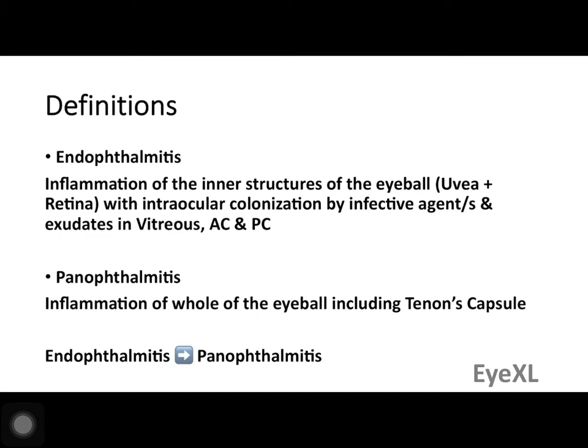Endophthalmitis is an inflammation of the inner structures of the eyeball — 'endo' meaning inside. Basically the uvea and retina are affected, with intraocular colonization by infective agents. It could be unimicrobial or polymicrobial infection; it is more commonly polymicrobial. Exudates are seen in the vitreous, anterior chamber, and posterior chamber.